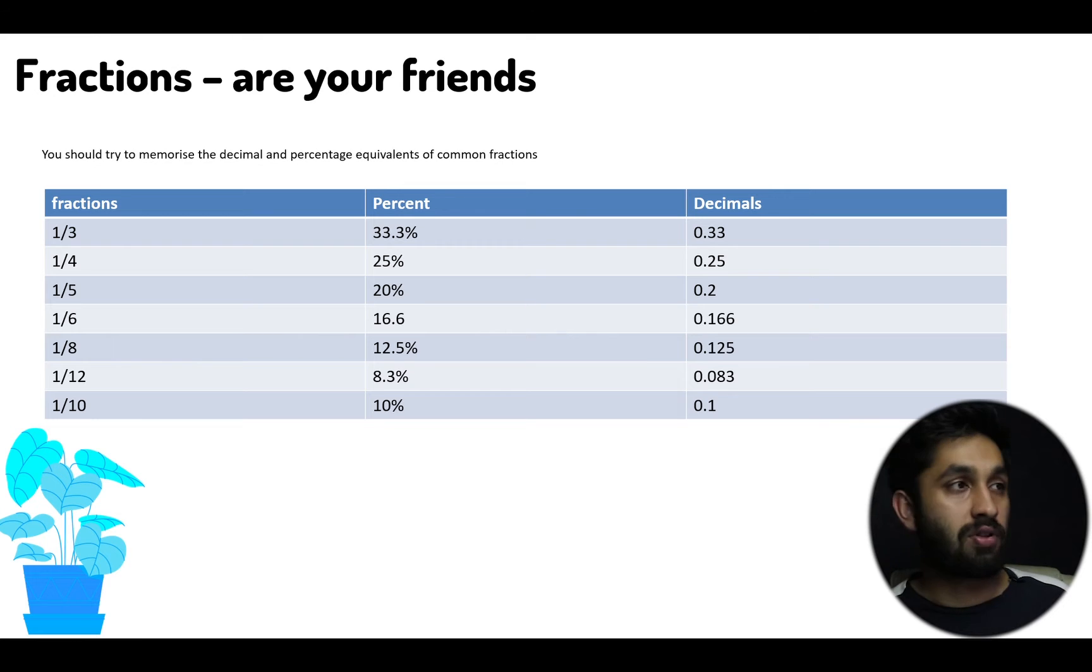You could say the price was reduced by one-third. Rather than typing one-third on the calculator, you know the decimal version which is 0.33, so you can plug that into the calculator to work out the answer. Memorizing these is really important.